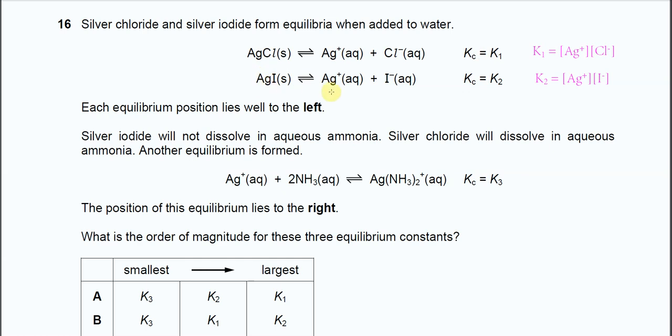Each equilibrium position lies well to the left, meaning most of the species will be the reactant, the salt. This means the KC value for these two equilibria will be very low because these two are only partially soluble.